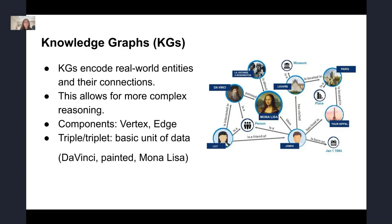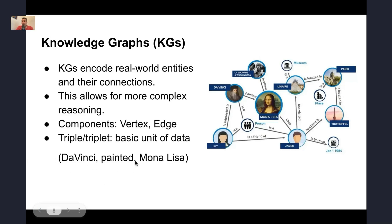Triples all look like a sentence — who did what. If you think about it at a high level, the relationship in a triple is usually the verb, the action. For example, 'Da Vinci painted Mona Lisa' or 'Washington, D.C. is capital of United States.' This is the definition of a knowledge graph: an explicit description of a set of concepts and the relationships between them.